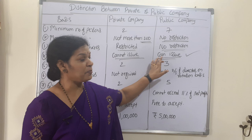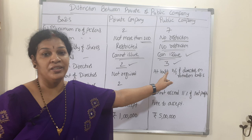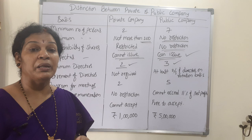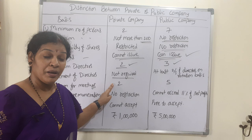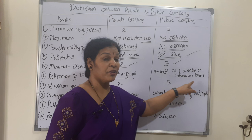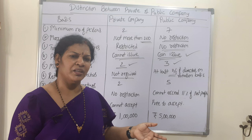Next is the minimum number of directors. A private company requires a minimum of two directors, and a public company requires a minimum of three — easy to remember: two and three. Regarding retirement of directors, there is no such requirement in a private company. However, in a public company, at least two-thirds of directors must retire on a rotation basis every year.